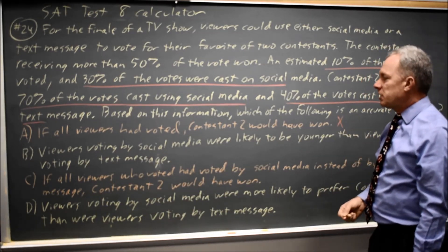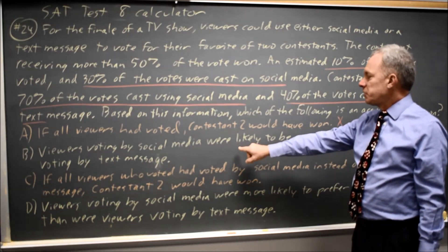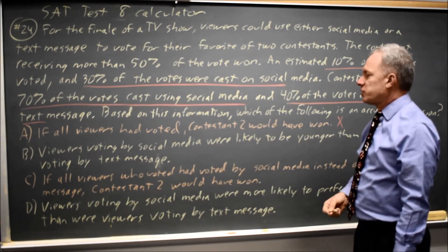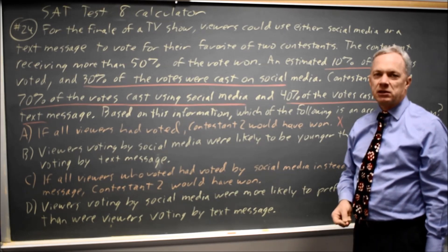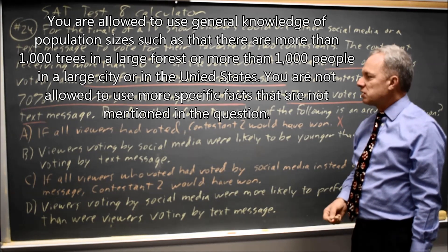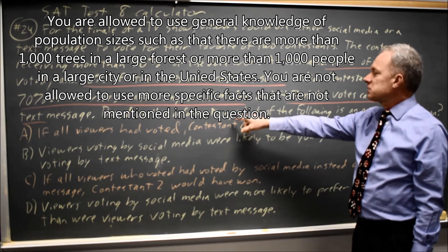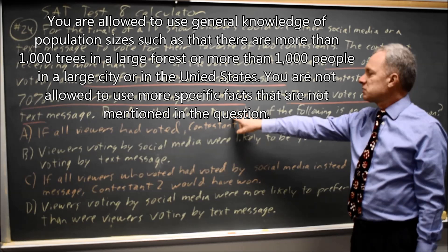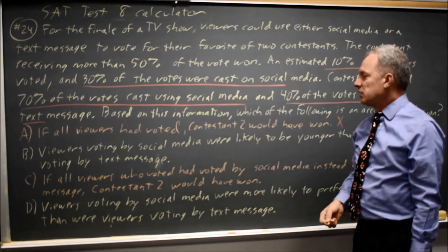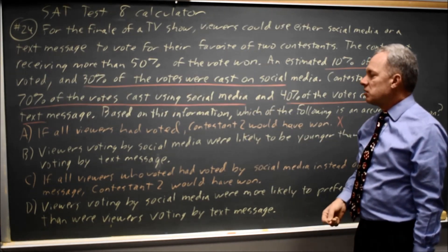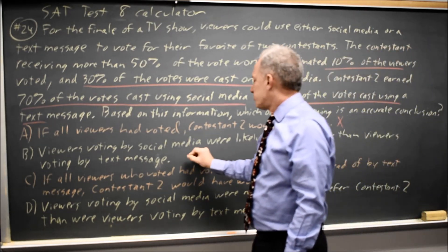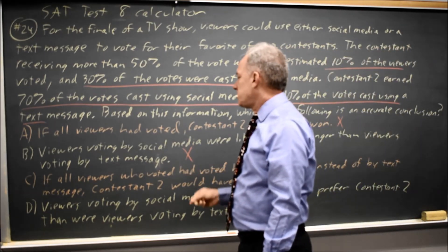Choice B: viewers voting by social media were likely to be younger than viewers voting by text message. You may or may not draw that inference from general knowledge, but this question asks based on this information only, and we do not know from this question anything about the age of the voters, so choice B is wrong.